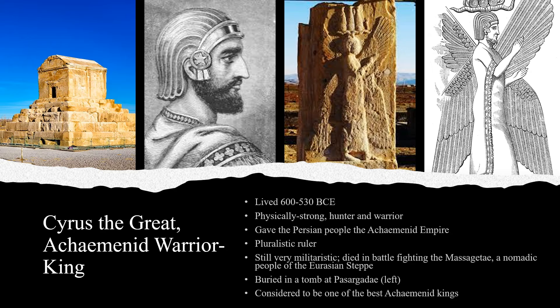Here is Cyrus the Great, the Achaemenid warrior king. Cyrus lived from about 600 to 530 BCE — 70 years, a good long life by ancient world standards. The evidence suggests that Cyrus was healthy and physically strong, being a hunter and a warrior. Through his military exploits — the conquest of the Medes and the Babylonians especially — Cyrus gave the Persian people the Achaemenid Empire. Although he was very militaristic and conquered many people groups, Cyrus himself was fairly pluralistic.